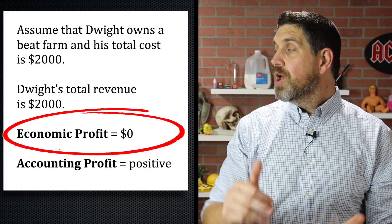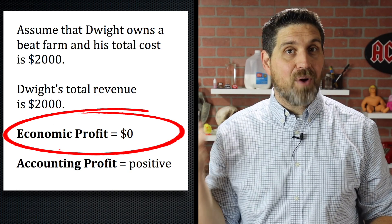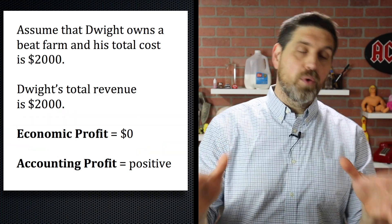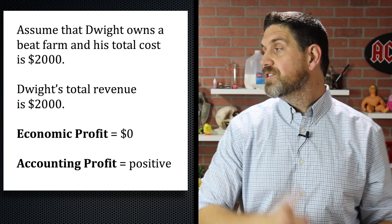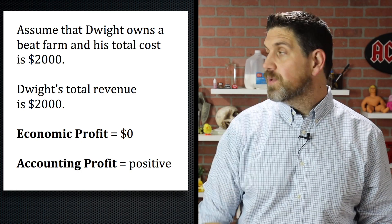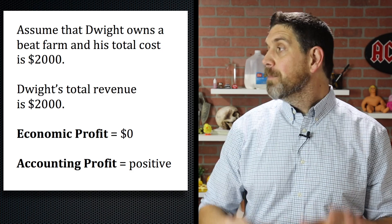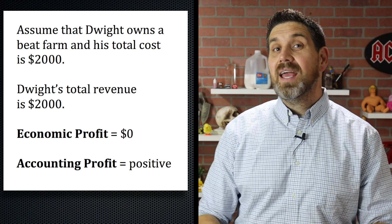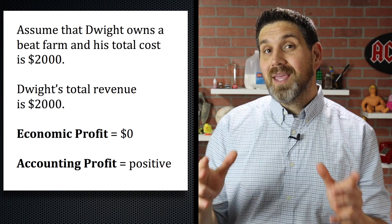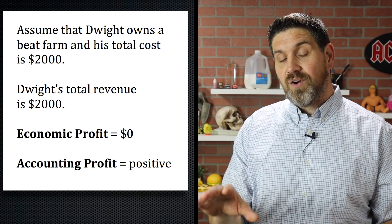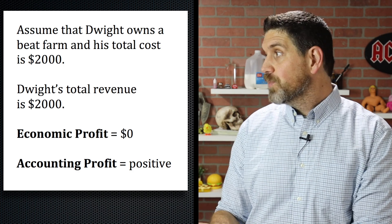But there's one more big idea here that I have to mention. Notice that making no economic profit is not a bad thing. If the total cost, including implicit costs, is $2,000 and the total revenue is $2,000, you make no economic profit, but you are making accounting profit. This means you're making enough money to cover all of your explicit costs and have money left over that covers your opportunity costs, which is great.